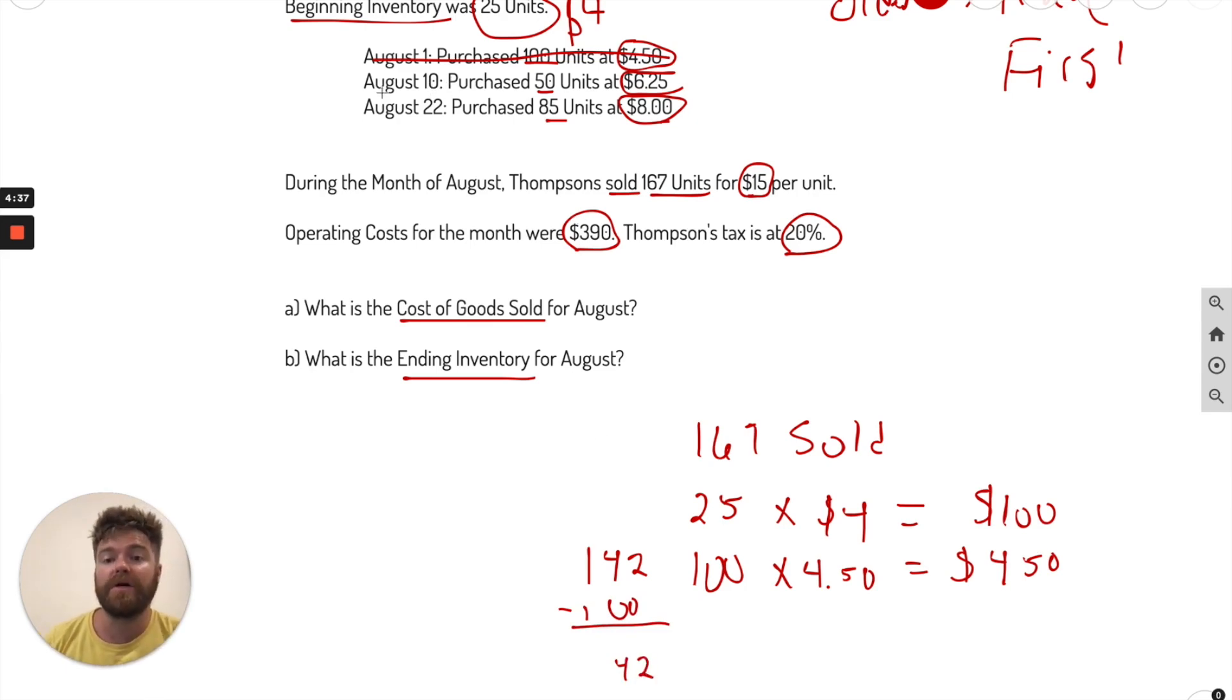So now if you subtract 100 from here, we're at 42 units remaining to account for. So we go to the next oldest, which is August 10th, and we bought 50 units. We don't need all 50, we only need what's remaining, which is 42. And each of those units were $6.25. So that equals $262.50. Now, we didn't use all of this, we only used 42. So that means we have 8 left here, because there was 50 total. 50 minus 42 is 8. And then we had 85, the remainder there.